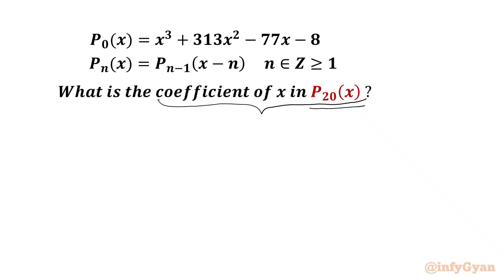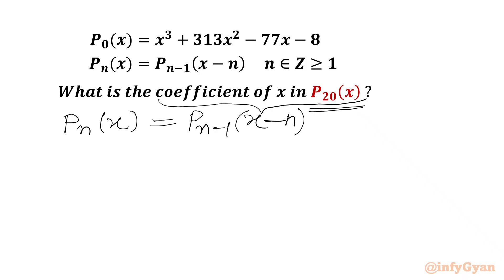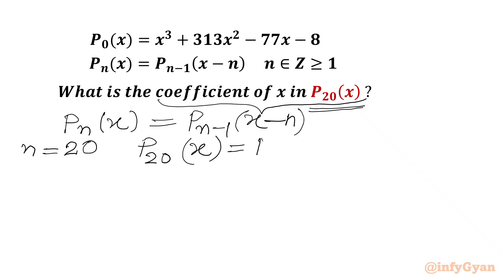So we have to find out P₂₀(x) first. Let me write here: Pₙ(x) = Pₙ₋₁(x - n). Now we have to calculate P₂₀(x), so let's plug in n = 20. We will get P₂₀(x) on the LHS, and on the RHS we will get P₁₉(x - 20).